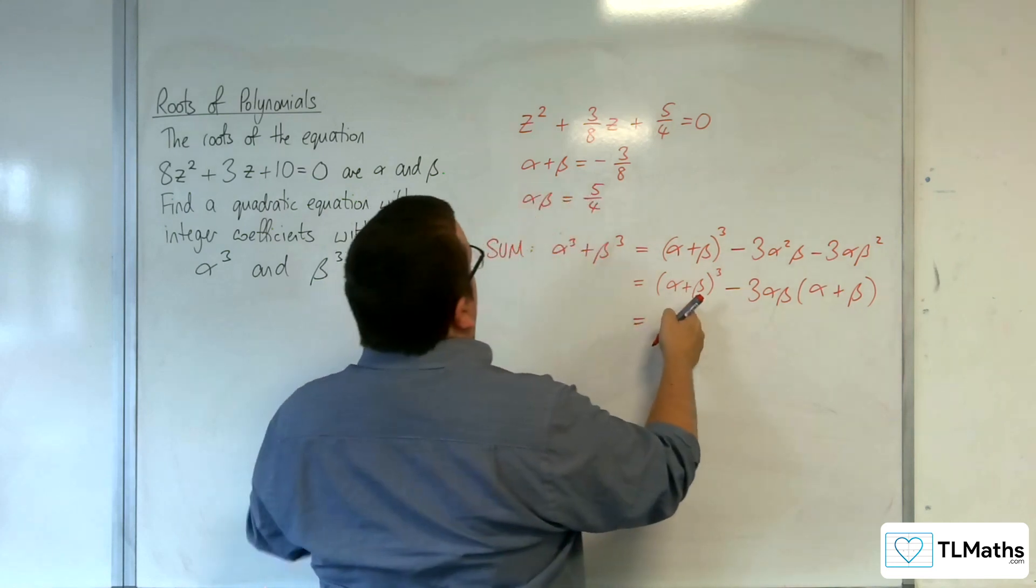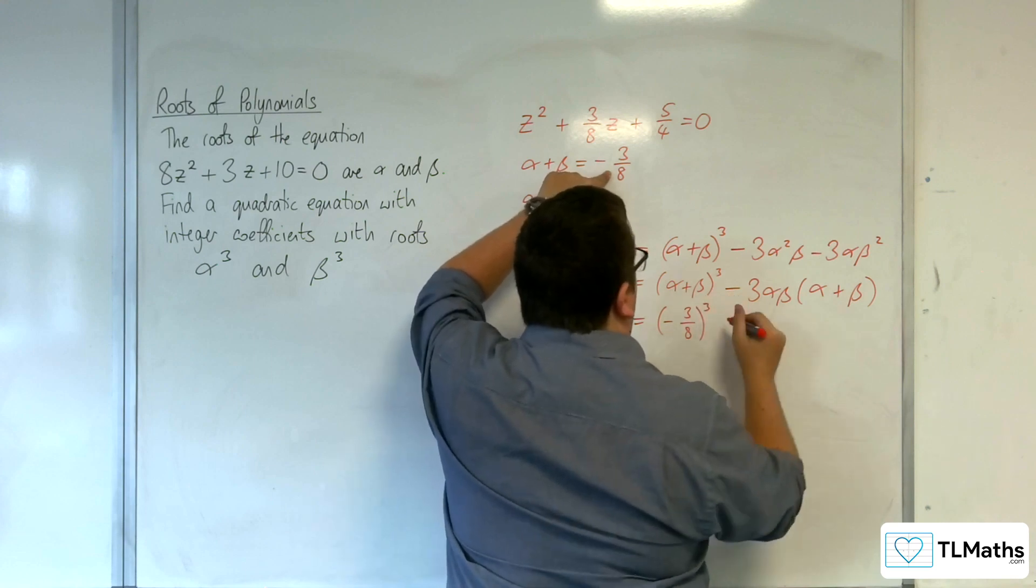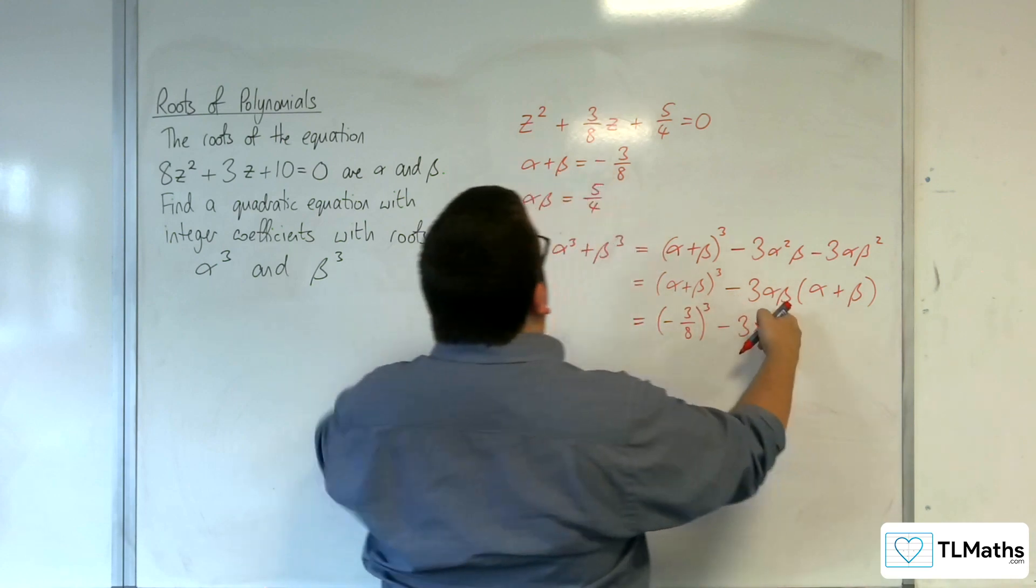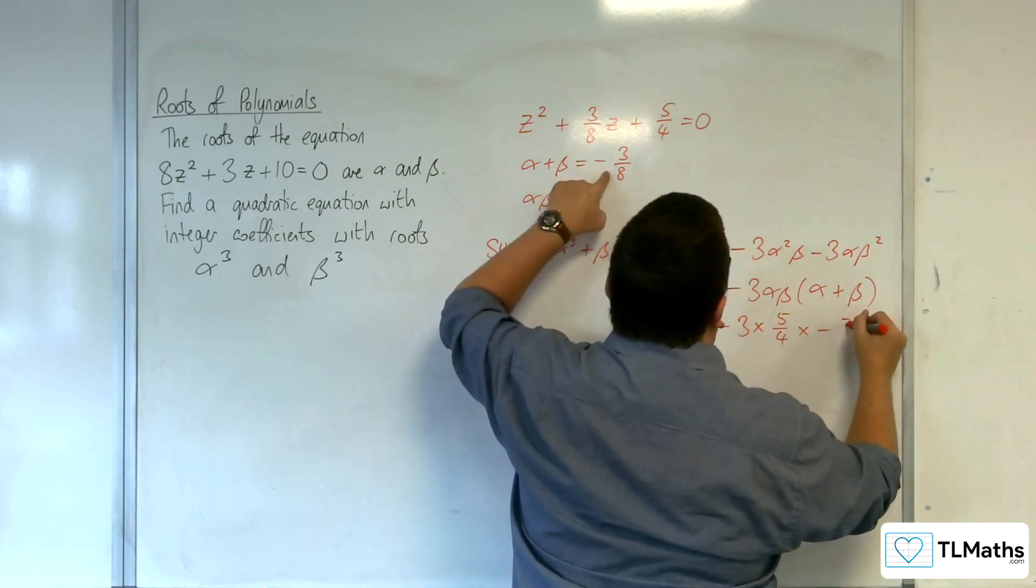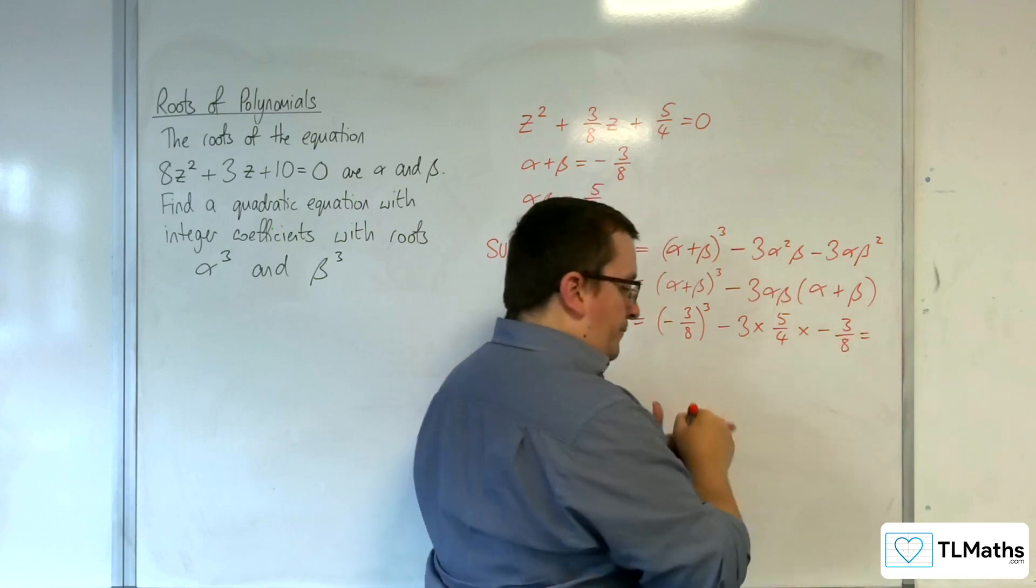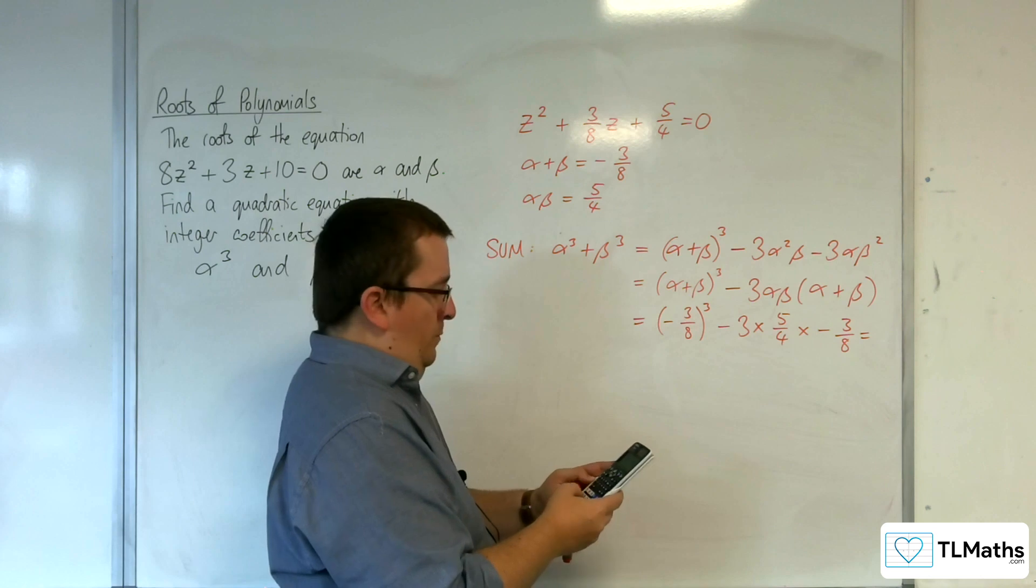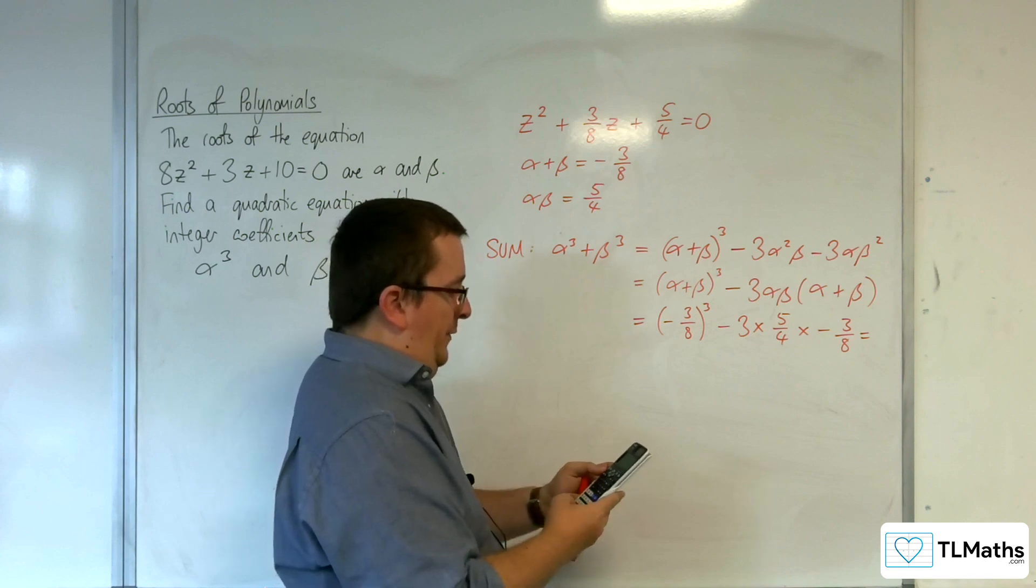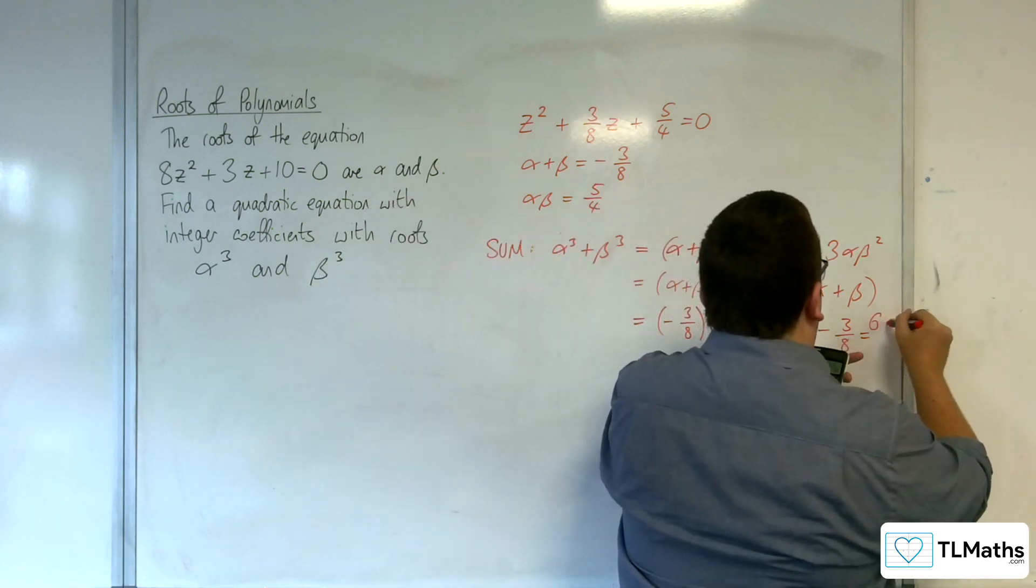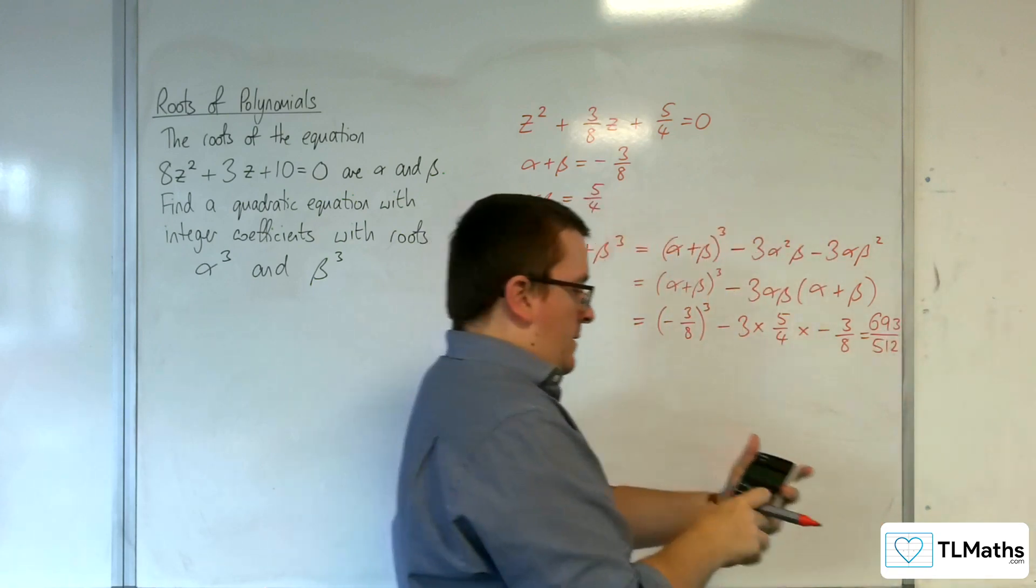So α + β is -3/8. We have (-3/8)³ - 3αβ(α + β), which is (-3/8)³ - 3(5/4)(-3/8). And we get 693/512.